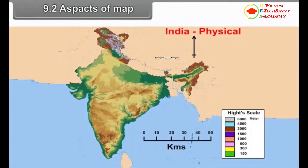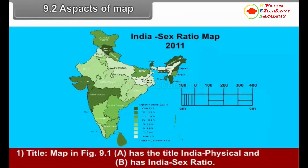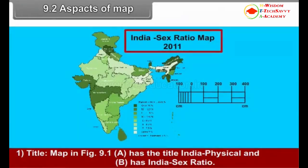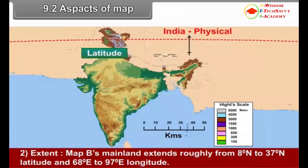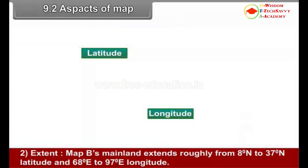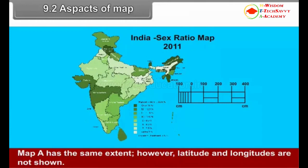9.2 Aspects of Map. First, Title: Map A has the title 'India Physical' and Map B has 'India Sex Ratio'. Second, Extent: Map B's mainland extends roughly from 8 degrees north to 37 degrees north latitude, and 68 degrees east to 97 degrees east longitude. Map A has the same extent; however, latitudes and longitudes are not shown.